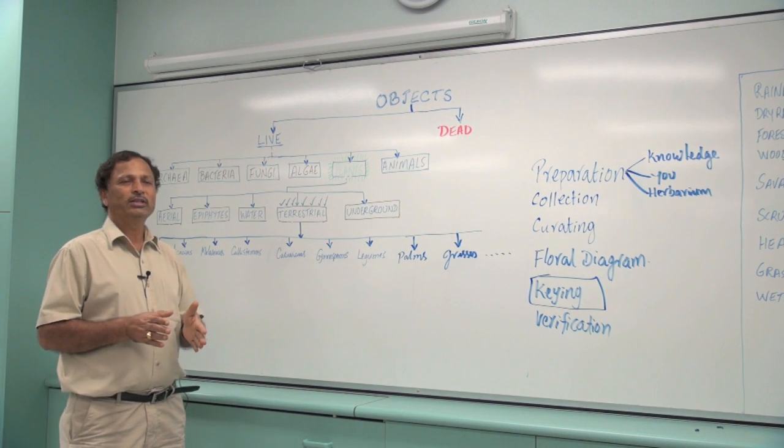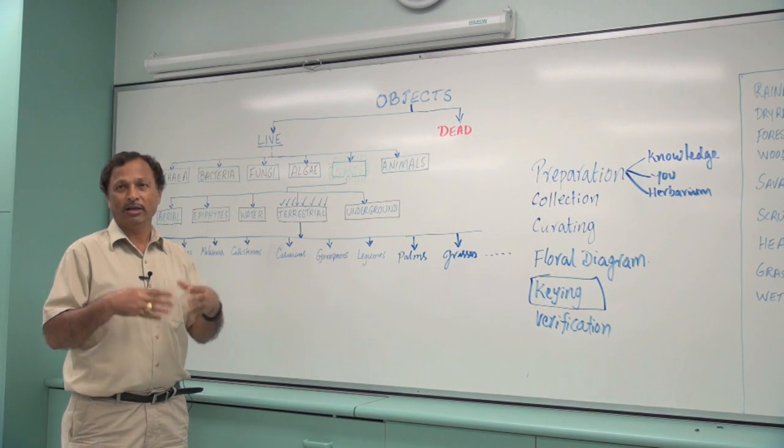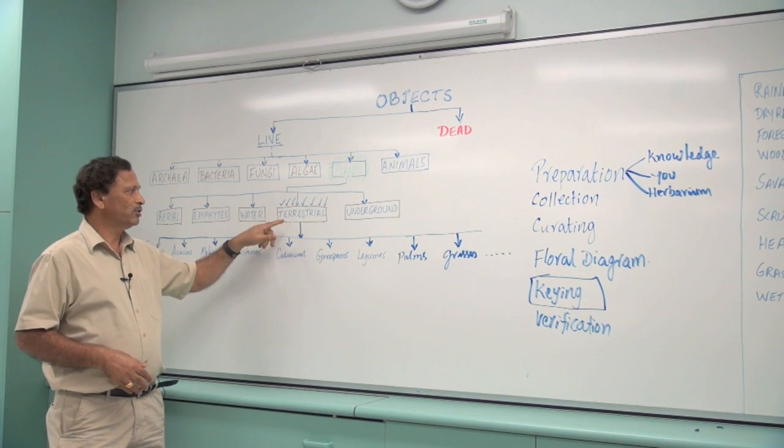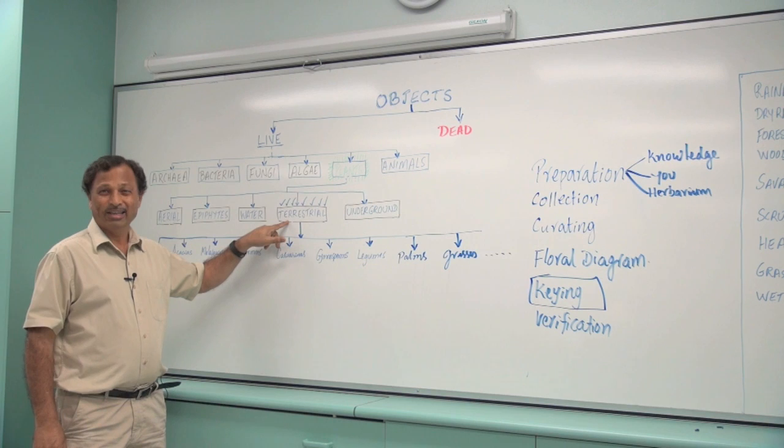But for central Queensland or the tropical part of Australia, that is Queensland, we find the majority of the plants to be in this category: terrestrial plants.